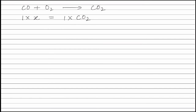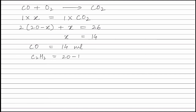Therefore, total moles of carbon dioxide equals 2(20 - X) + X, and this is equal to 26. Solving this, we get X = 14. Therefore, the volume of carbon monoxide is 14 ml and the volume of C2H2 is 20 - 14 = 6 ml.